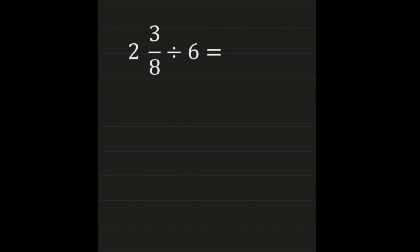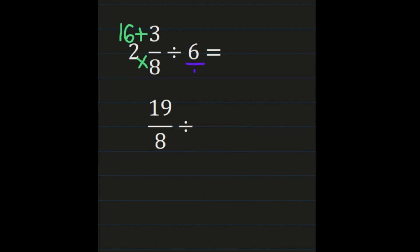For our final example, we have 2 and 3 eighths divided by 6. We have a mixed number divided by a whole number. We need the mixed number as an improper fraction: denominator times whole number — 8 times 2 is 16 — then add the numerator: 16 plus 3 is 19. The denominator of 8 remains the same. We also need the whole number 6 in fractional form, so we put it over 1: 6 over 1.